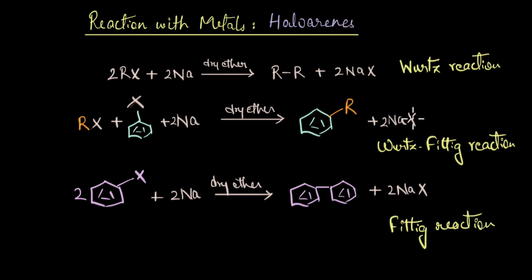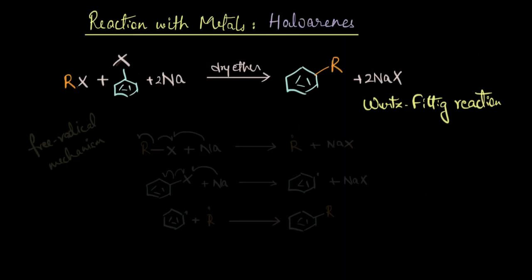Now if you look at the mechanism, we know that Wurtz reaction has been proposed to occur via two different mechanisms: one is a free radical mechanism and the other one is the ionic mechanism, and something similar can be extended to these reactions as well. If you talk about the free radical mechanism, you can see that